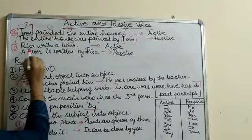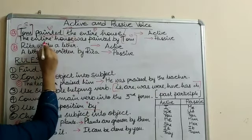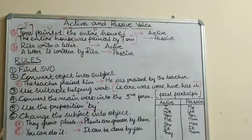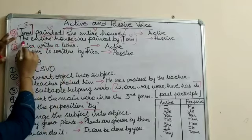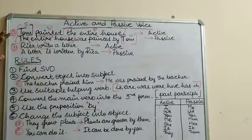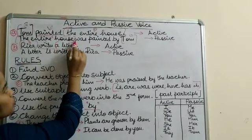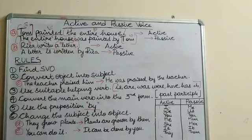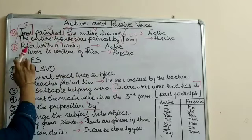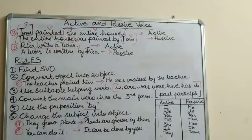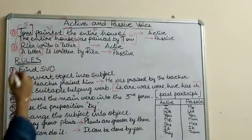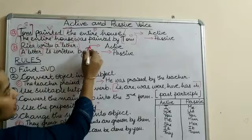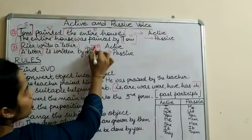For example: 'Rita writes a letter.' Writes is the verb. Rita is the performer of the action and is the subject. The letter is the receiver of the action and is the object — so this sentence is in the active voice. When we change it into the passive, it becomes 'A letter is written by Rita.' The object becomes the subject, and Rita changes to the object.